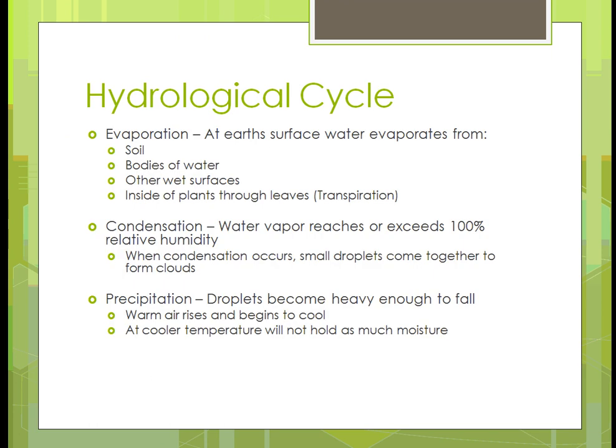Evaporation occurs at the Earth's surface. It can come from soil — when the sun gets there, some moisture comes out of the soil and that's how the soil dries. It can also come off bodies of water like the ocean, rivers, streams, and lakes. Any other wet surface — a car, the roof of your house — it's going to evaporate off of that. When it dries, it becomes that vapor and goes up and forms clouds.